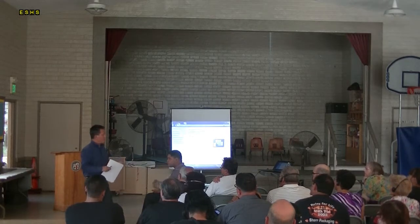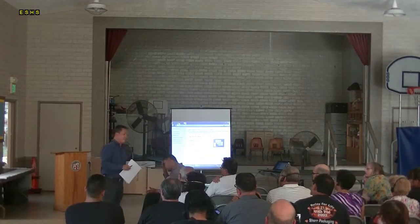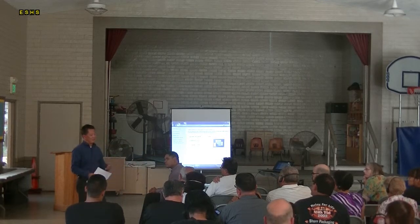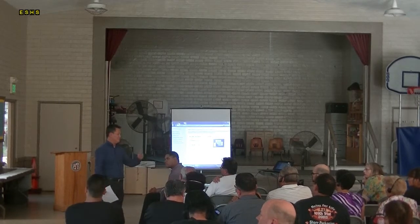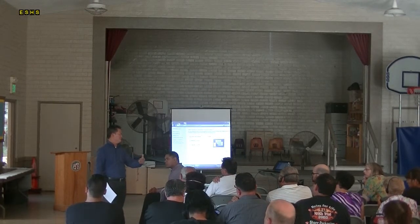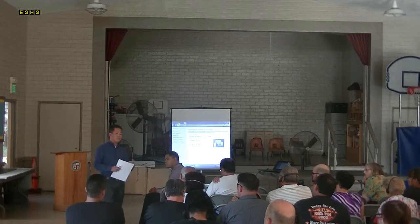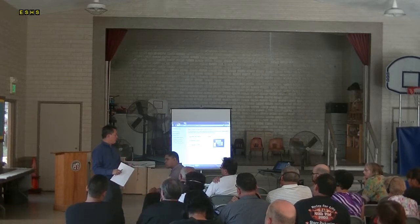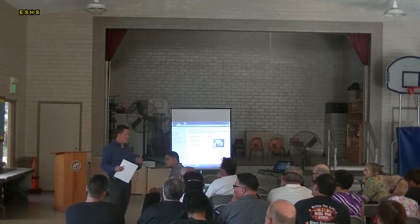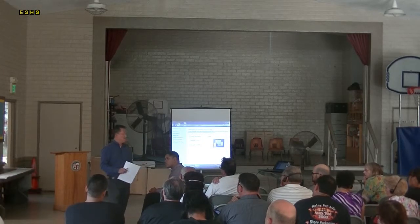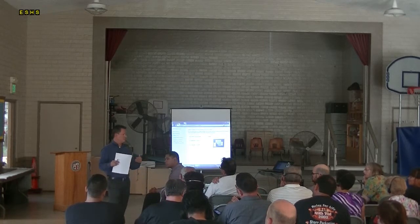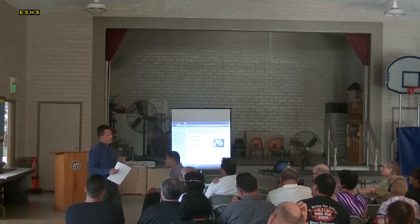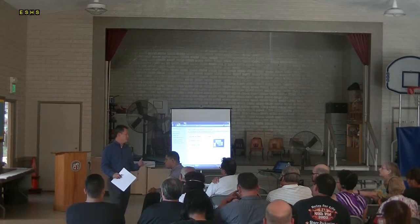We've been working closely with the Department of Transportation as well as street lighting on revising and updating the traffic control plan to go into Stage 1. Keep in mind Stage 1 consists of 6 phases — phases 1 through 5 and so on. We have a temporary traffic signal, and temporary traffic lighting has been approved. We're waiting for DWP to provide service so we can start to implement the signal and lighting.